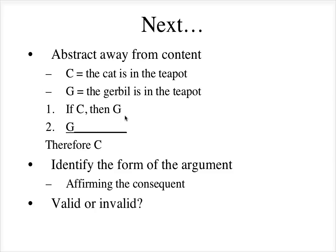Is this form valid or invalid? It's invalid. Consider this argument: if it is raining, then the streets are wet; the streets are wet; therefore it's raining. You can't actually conclude that, because there are a lot of other ways the streets could have gotten wet — maybe somebody sprayed it with a hose. So this argument is invalid, and it's invalid no matter what the content is. It's invalid by virtue of its form.